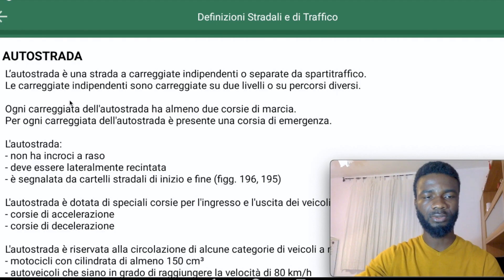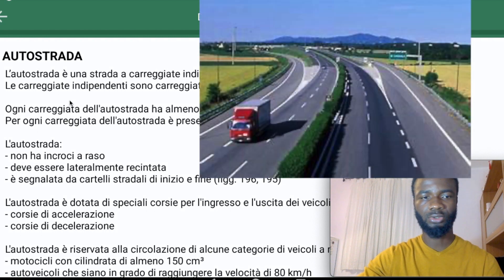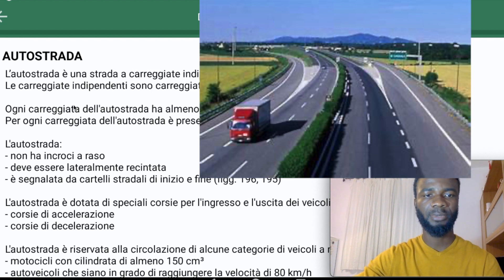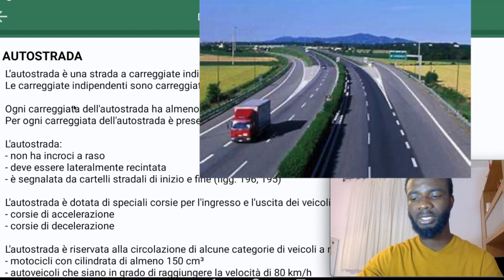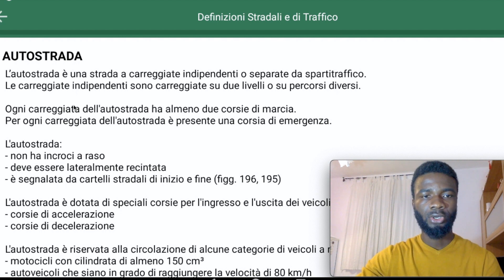As we promised in our previous video, today we start with the Auto Strada. When we say Auto Strada, it is basically what we call highways or motorways. Auto Strada is a wide road divided into two carriageways, separated by a traffic island — and we have already covered what a traffic island is.